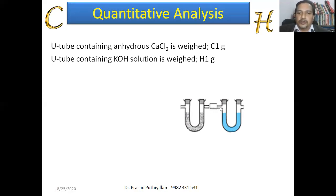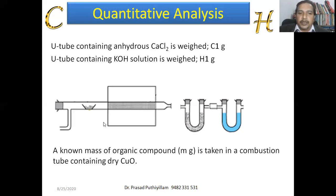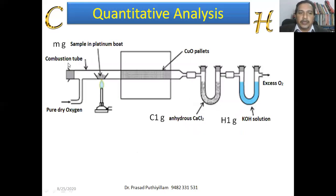These U-tubes are connected, and a known mass of organic compound — say M grams — is taken in a combustion tube. This combustion tube contains dry copper oxide; copper oxide is kept dry, without moisture. The sample is taken in a platinum boat — platinum is less reactive and won't react with the organic compound, that's why platinum is used. Copper oxide pellets are taken, and two U-tubes: one containing anhydrous calcium chloride and another containing potassium hydroxide (KOH) solution.